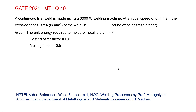GATE 2021 metallurgy question 40. A continuous fillet weld is made using a 3000 watt welding machine at a travel speed of 6 mm per second. The cross-section area in mm² of the weld is to be found. Given: the energy required to melt the metal is 6 joules per mm³, heat transfer factor 0.6, and melting factor 0.5.